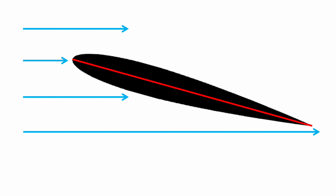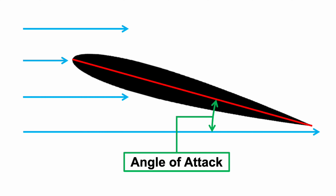We can create lift by tilting the airfoil upwards as the air flows past it. We measure how much the airfoil is tilted upwards by measuring the angle between the chord line and the airflow. This is called the angle of attack.